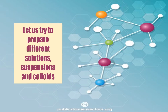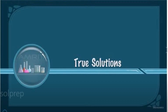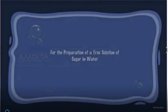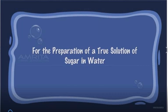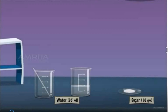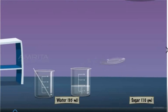Let us try to prepare the different solutions, suspensions, and colloids. Let us prepare true solutions. We will start with a true solution of sugar in water. Put 10 grams of sugar in 95 ml of water. Using a stirring rod, stir the mixture vigorously so that the sugar will dissolve.